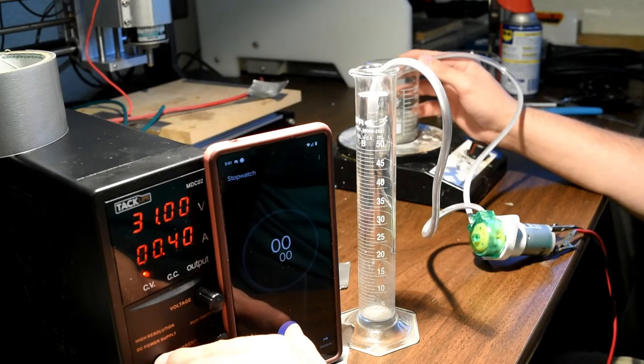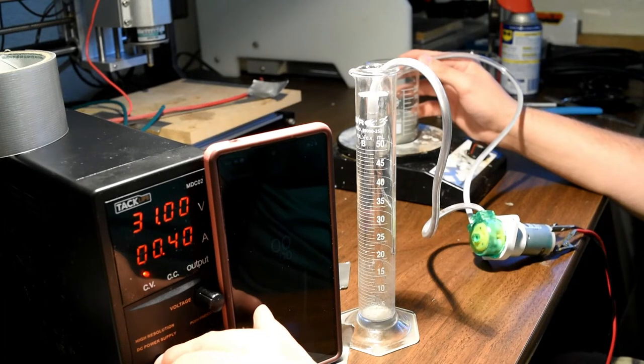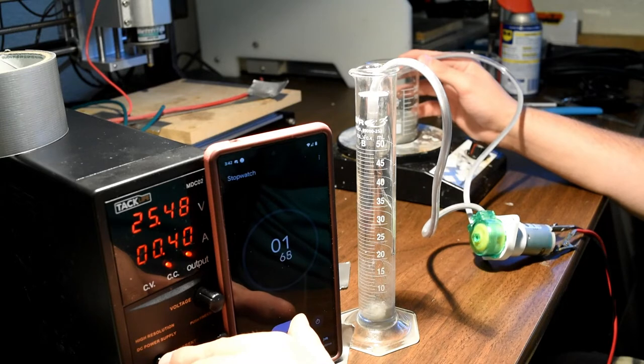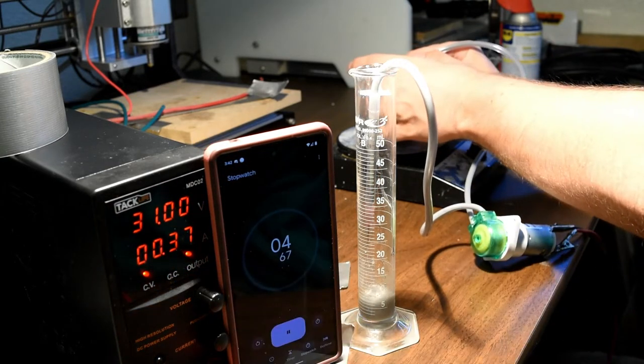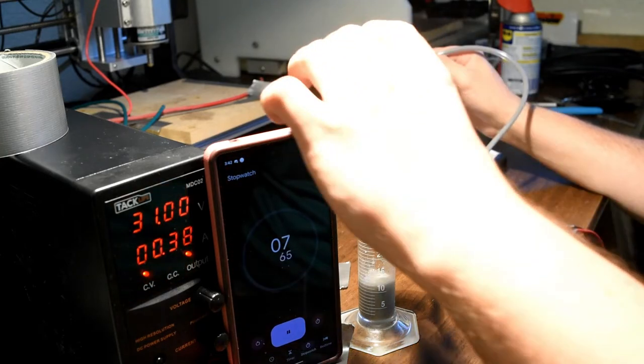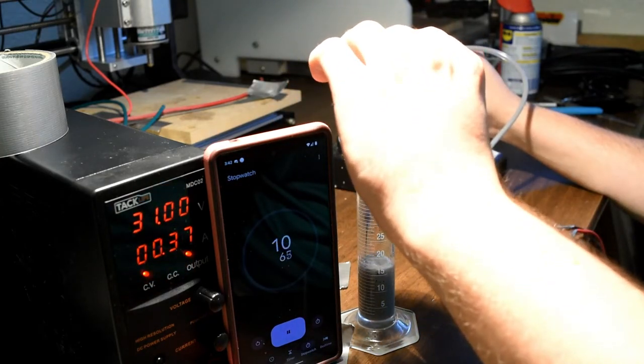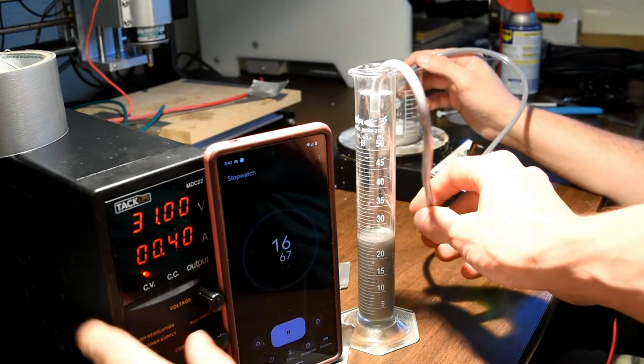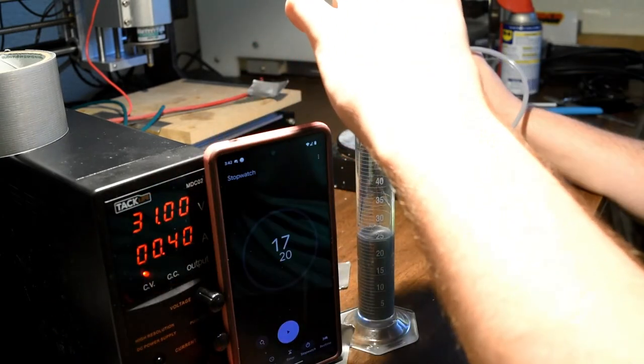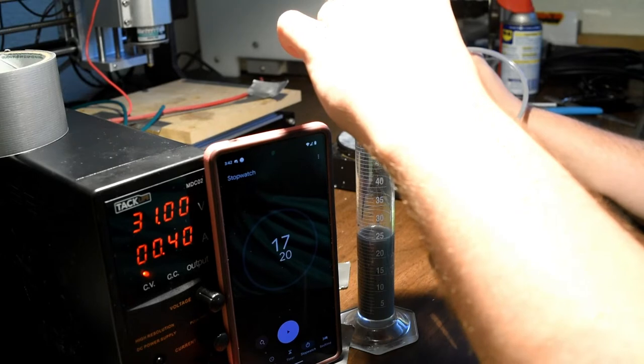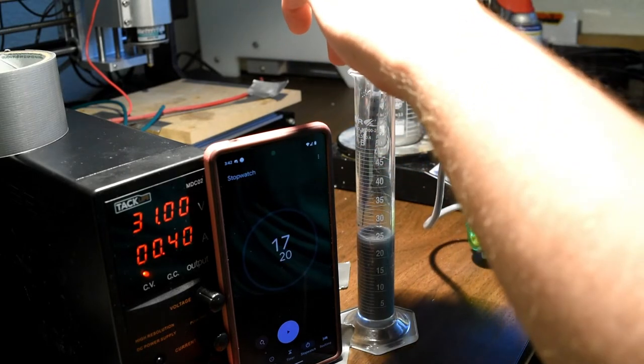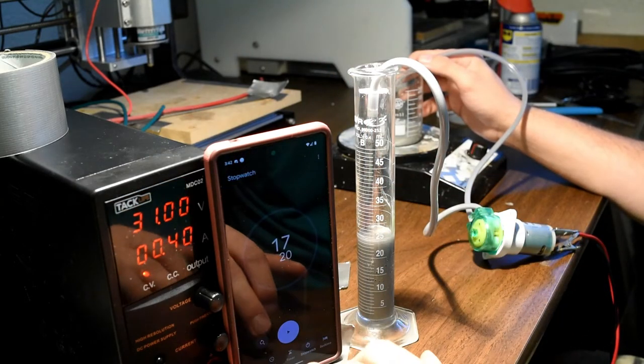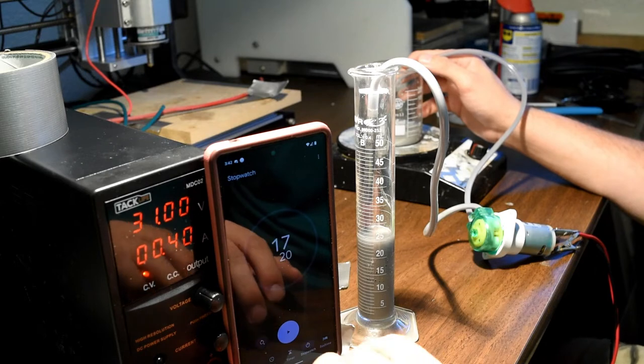So we're doing a volume rate of flow test with our peristaltic pump, trying to figure out basically how many mils per minute that we're flowing. About 16.9 seconds to get about 25 mils at 31 volts of 0.4 amps. That's pretty fast, that's a lot of flow rate. We're going to set up again and see just how slow we can go.